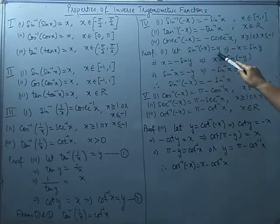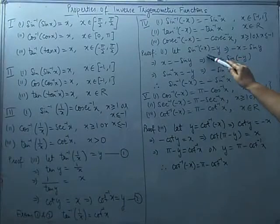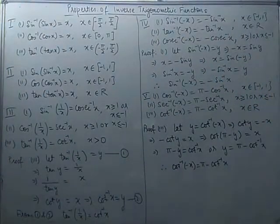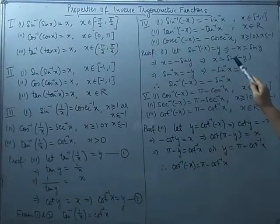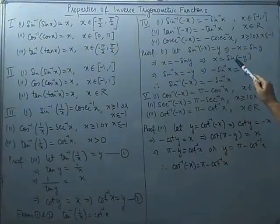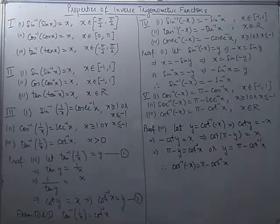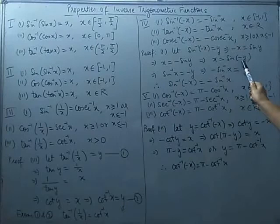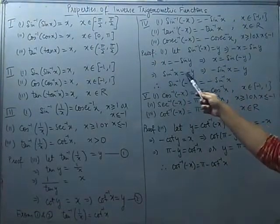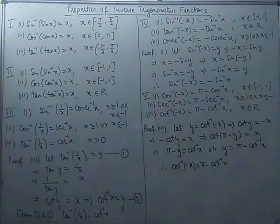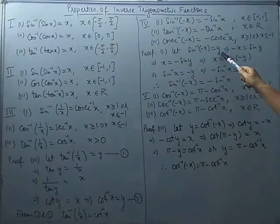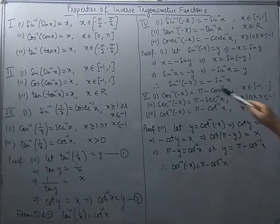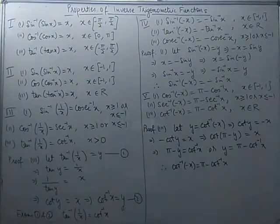Proving the first one: let y = sin⁻¹(-x), then sin y = -x. Multiplying both sides by -1, we get x = -sin y. Since -sin y = sin(-y), we have x = sin(-y). Taking the inverse sin function on both sides, sin⁻¹x = -y. Multiplying both sides by -1, -sin⁻¹x = y. Since we started with y = sin⁻¹(-x), we now have y = -sin⁻¹x. Therefore, sin⁻¹(-x) = -sin⁻¹x.